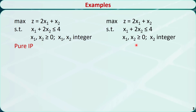This is the second example. The only difference is that only x2 is required to be an integer, and x1 is not required to be an integer. So it is a mixed integer programming problem.